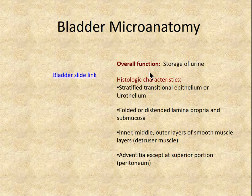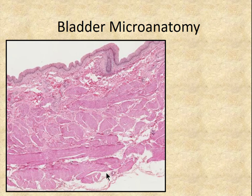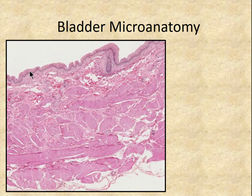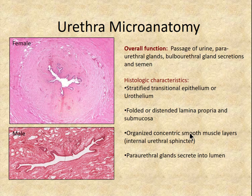The bladder also has transitional epithelium and a folded lamina propria. It has three roughly organized smooth muscle layers collectively called the detrusor muscle. It has an adventitia, but at the superior portion where parietal peritoneum contacts the bladder, there is a serosa instead. Histologic sections show thick bundles of smooth muscle in the wall, lamina propria, and the epithelium with dome cells, columnar-shaped cells, and basal cells.